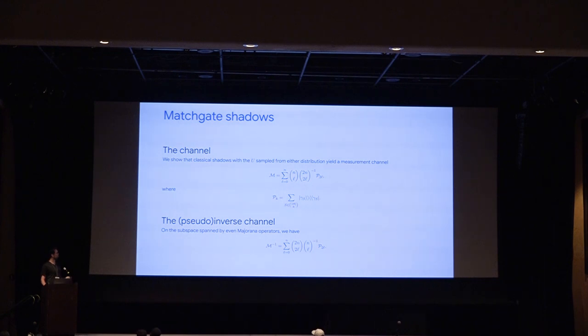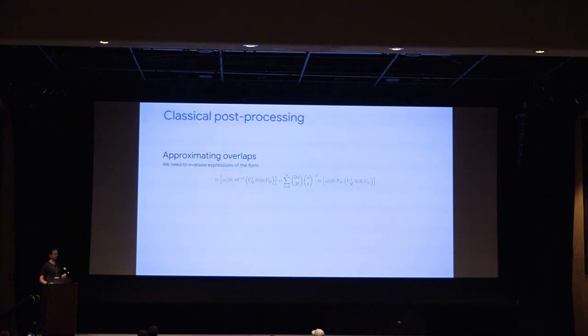Okay, so we have a channel, we have a nice closed form for it, but you might wonder how do we actually go and do the classical post-processing for the kinds of quantities that was the sticky part of a different group in the first place.